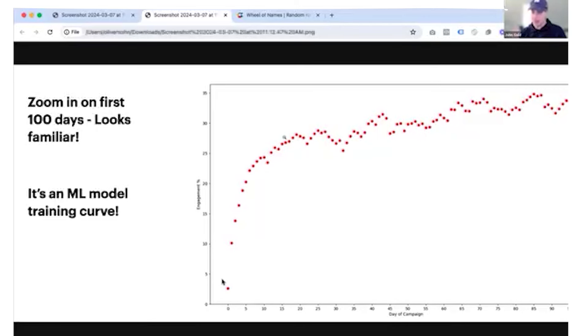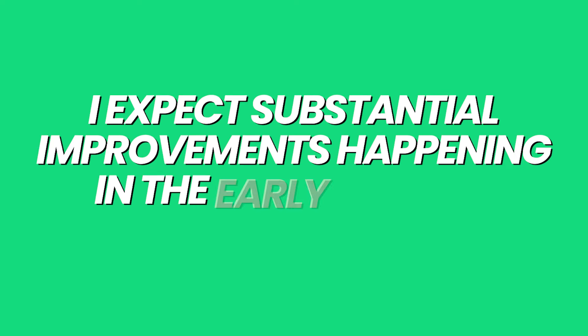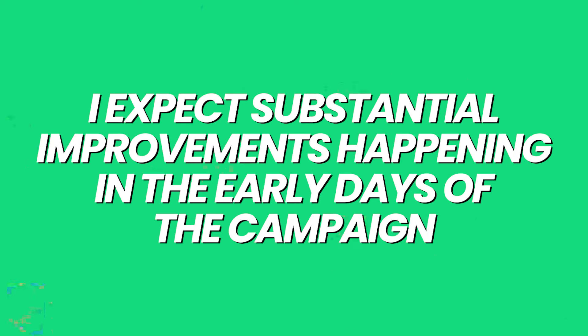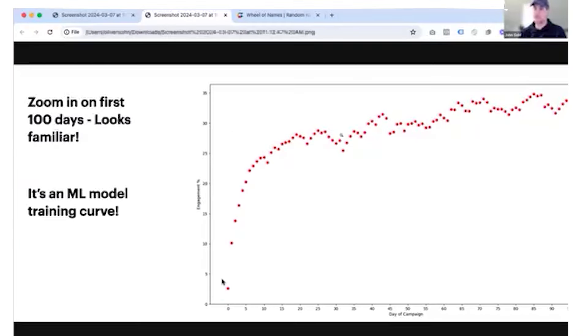My key takeaway from this: when I launch a new campaign, I expect substantial improvements happening in the early days, but in order to make a true assessment on the full potential of a campaign, I'll let it run at least 30 days. I don't necessarily expect 30 days to represent peak performance, but it looks like 60 to 90 days is really where we're looking at peak performance. However, we might be at like an 80 percent performance level after 30 days.